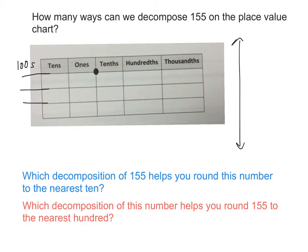How many hundreds do I have in the number 155, Jack? One hundred. How many tens do I have? Five. And how many ones do I have? Five. So I could write the number 155 like that on my place value chart. Go ahead and write that on your chart too.